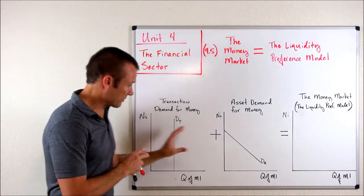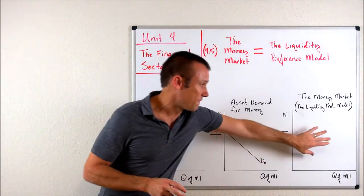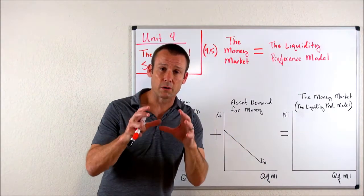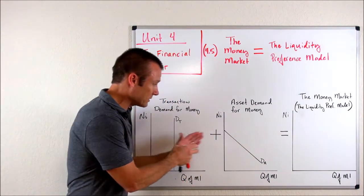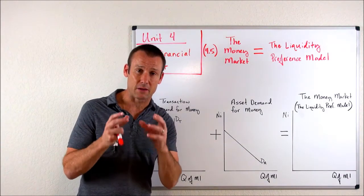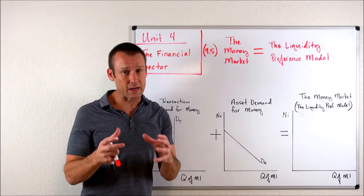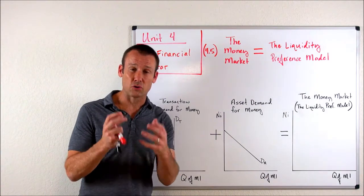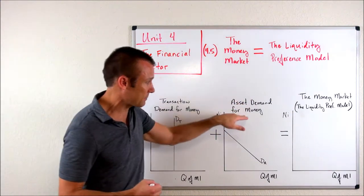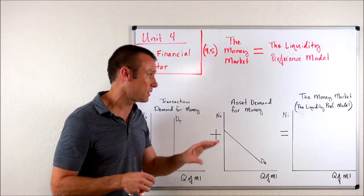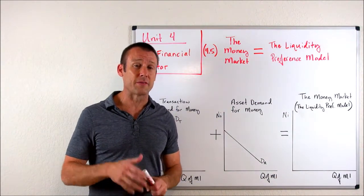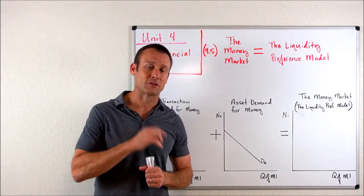Let's get going with the actual graphs. The one on the far right is the actual money market — that's the one we're building to. What we're going to do is called a horizontal summation of two graphs to get our money demand curve. That's an economic term: horizontal summation. Transaction demand for money and asset demand for money — we're going to horizontally sum those to get our money demand curve. The other curve, of course, is the money supply curve, which is simpler, so we're going to start with that.